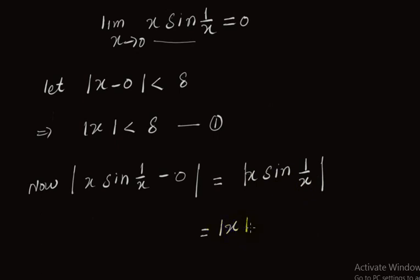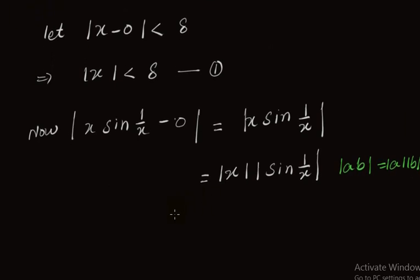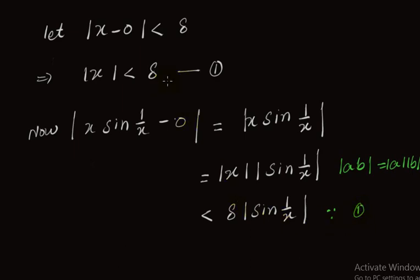We can write |x·sin(1/x)| as |x|·|sin(1/x)|, using the property that |a·b| = |a|·|b|. Since from Equation 1 we have |x| < delta, this expression is less than delta·|sin(1/x)|.